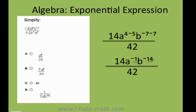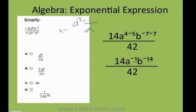However, we can never have negative exponents. So I'm going to bring them down, because anytime you have a negative exponent — for example, a to the negative 3 — that is the same as 1 over a to the 3.